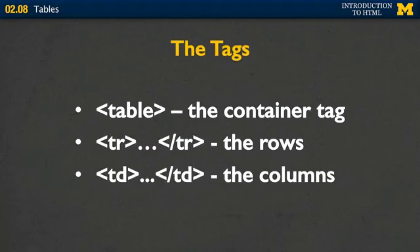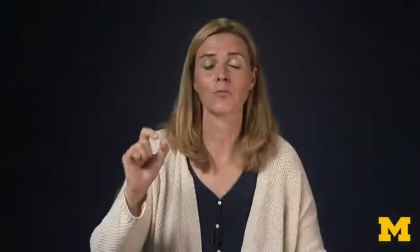Once you've decided what your table should look like, it's time to start thinking about the tags. You start off with the table tag, which is basically just a container element that's going to hold all the other tags inside of it. You're going to have the table row, and then TD — I think of this as table cells, not really columns, because you're talking about each individual box. So inside the table you'll have one or more table rows, and inside each table row you'll have one or more TD elements — the columns or cells.